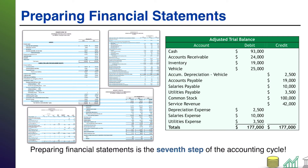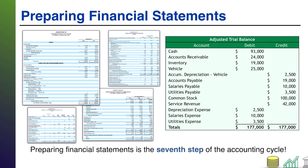At this point, you have captured all economic activity of the entity during the period. So you're going to take all of your assets, all of your liabilities, and your equity and dump that on the balance sheet. You're going to take your revenues and your expenses and dump those on the income statement. The only thing that you are not going to throw directly on the income statement or balance sheet from the adjusted trial balance is if you have retained earnings.